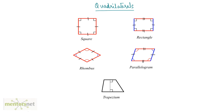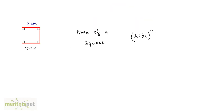Let us look at the formulas to calculate the area of each of these figures. Let us start off with a square. The area of a square is equal to the square of the length of its side. So let us find out the area of this square. The side is given as 5 cm, so the area will be 5 squared, which equals 25 square centimeters.